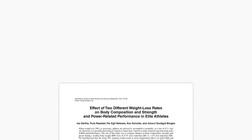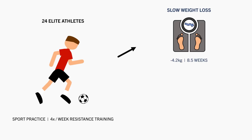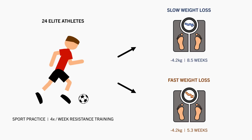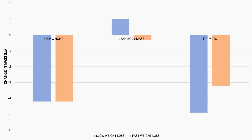For example, this study compared the effects of losing weight at two different rates on body composition changes. 24 elite athletes from the Norwegian Olympic Sports Centre underwent a weight loss phase while simultaneously performing resistance training four times per week and participating in their regular sport practice. Half the subjects lost 4.2 kilograms in an average of 8.5 weeks, while the other half lost the same body weight in 5.3 weeks. Although total weight loss was the same in both groups, the slow weight loss group saw slight increases in lean mass, while the fast weight loss group lost a little lean mass.